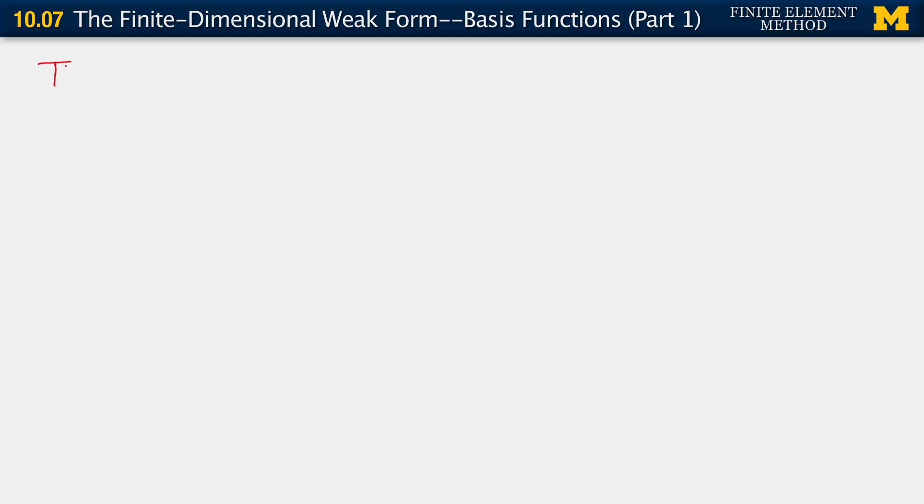Welcome back. We have got as far as deriving the finite dimensional weak form for 3D linearized elasticity. What we're going to do in this segment is essentially press ahead with the formulation. We essentially have to define basis functions, construct representations for the fields that we care about, and go ahead and compute the integrals that arise in the weak form. I'm going to call this segment the finite dimensional weak form and basis functions.